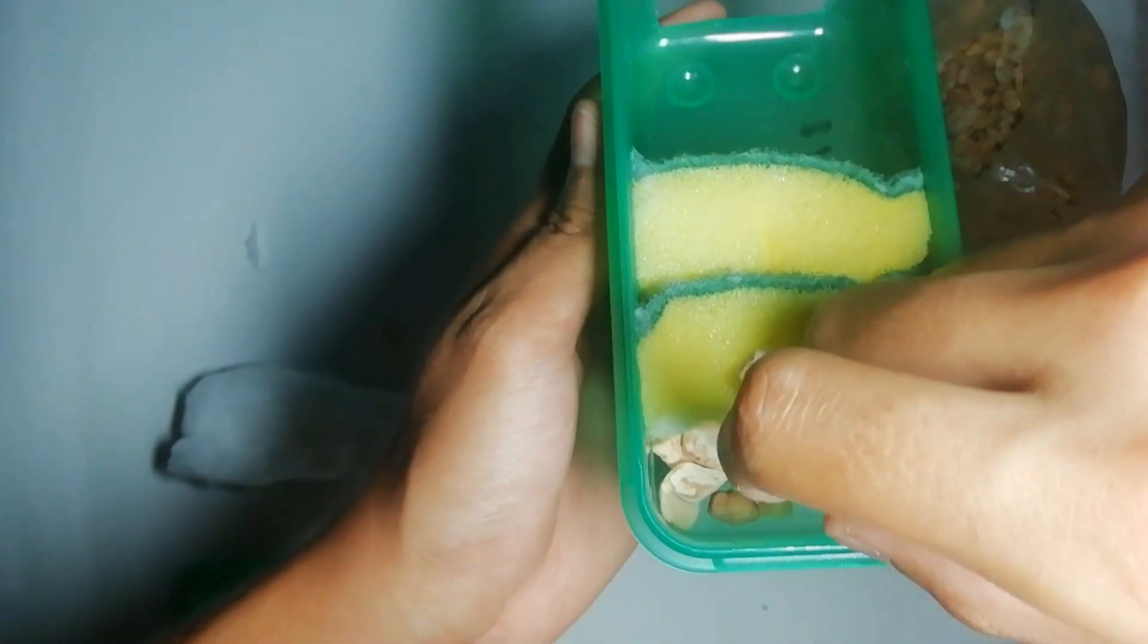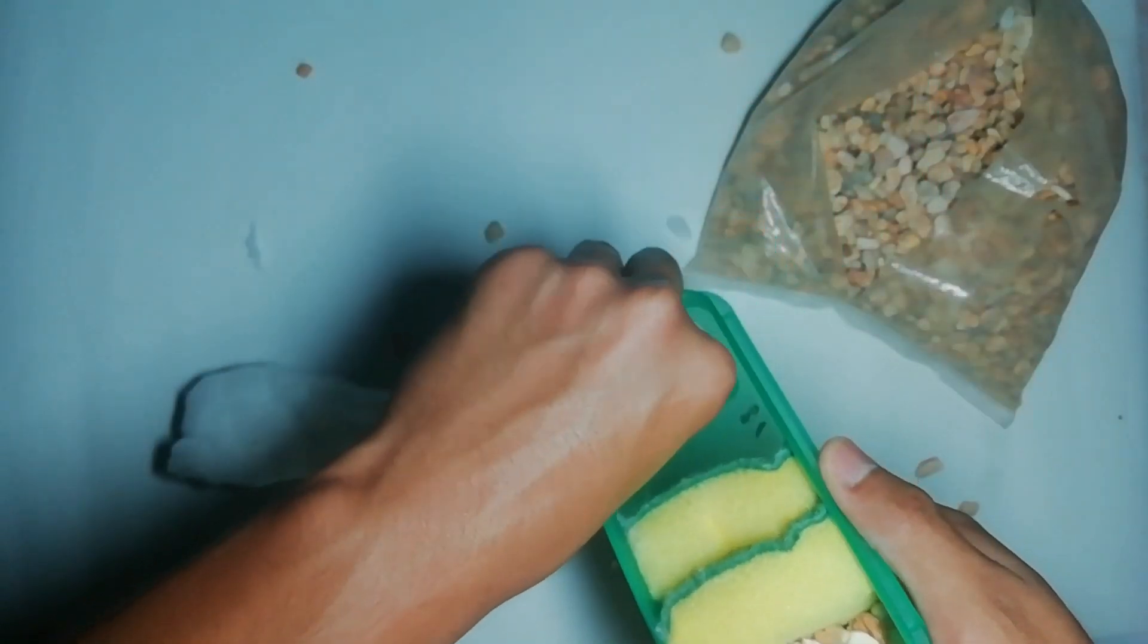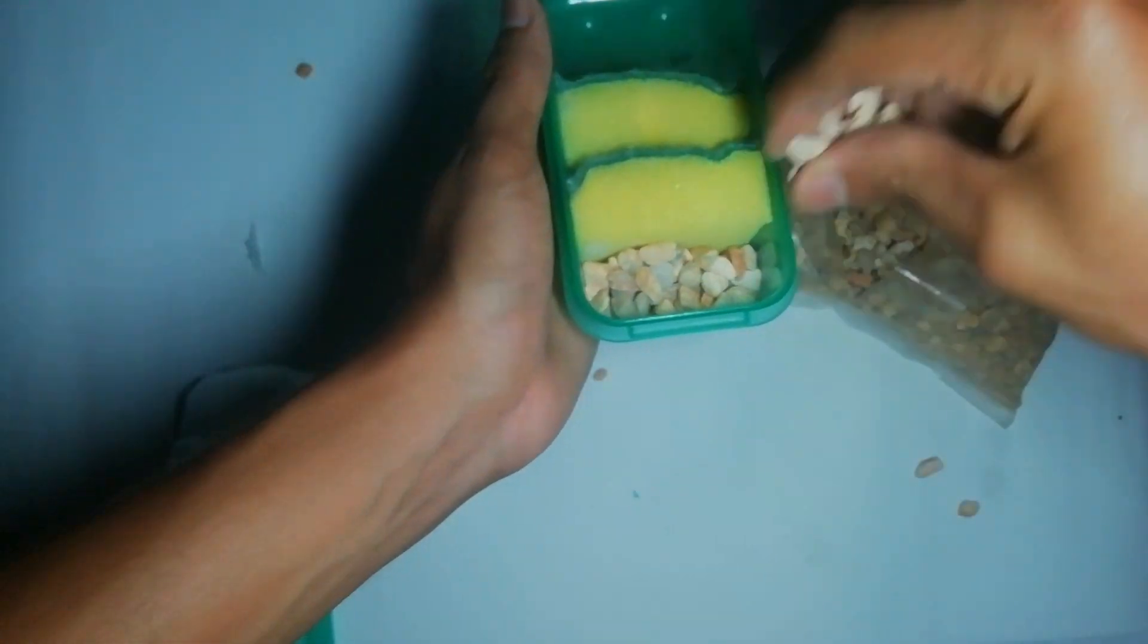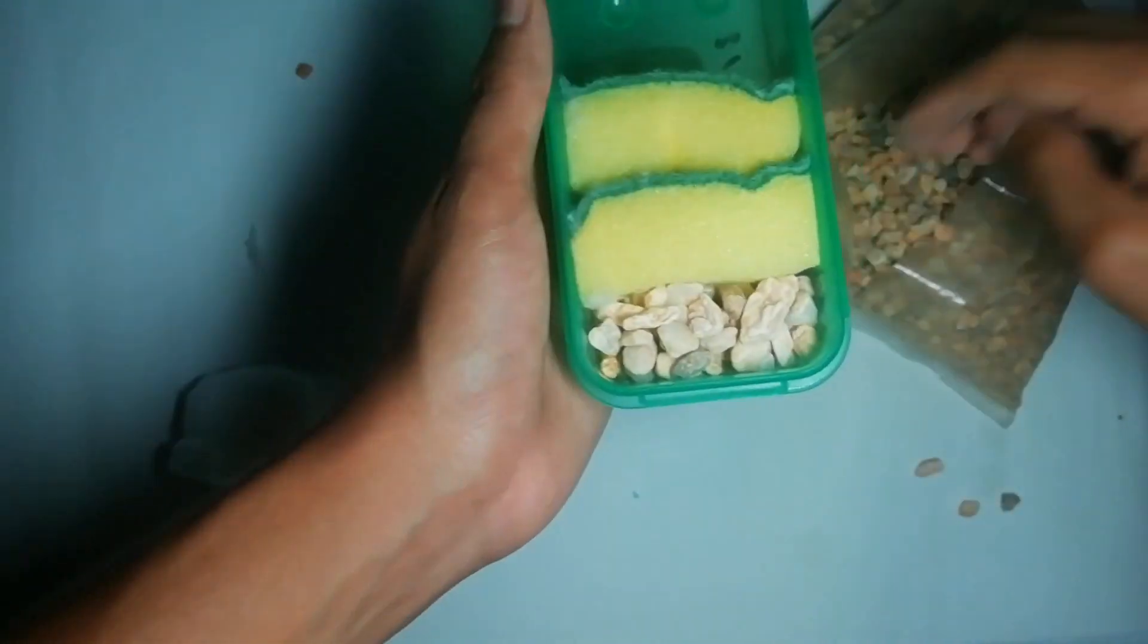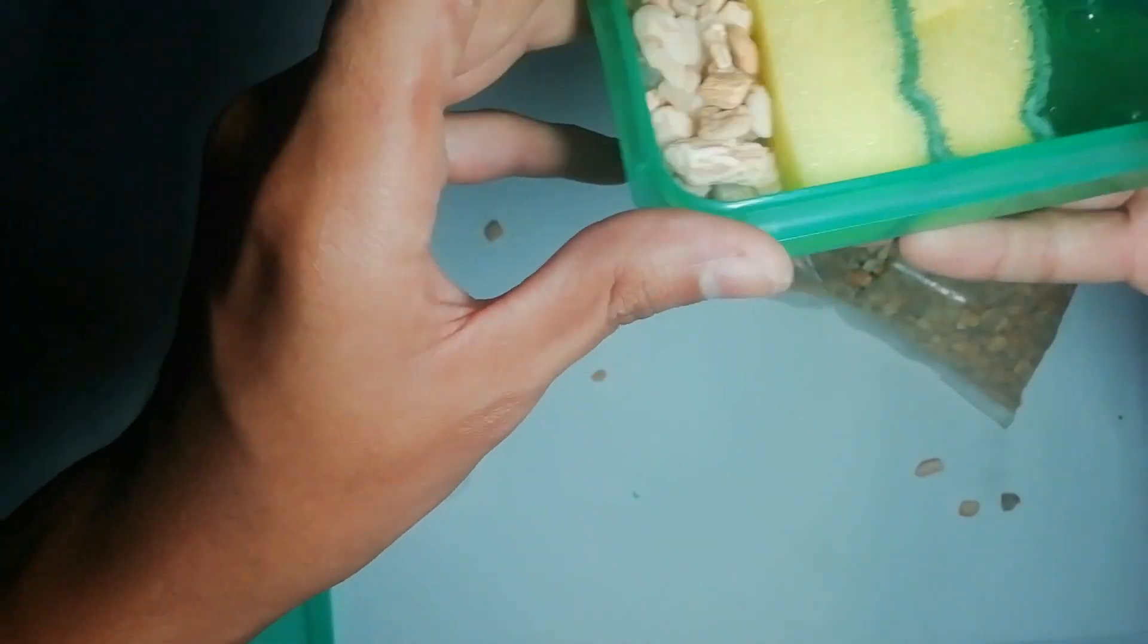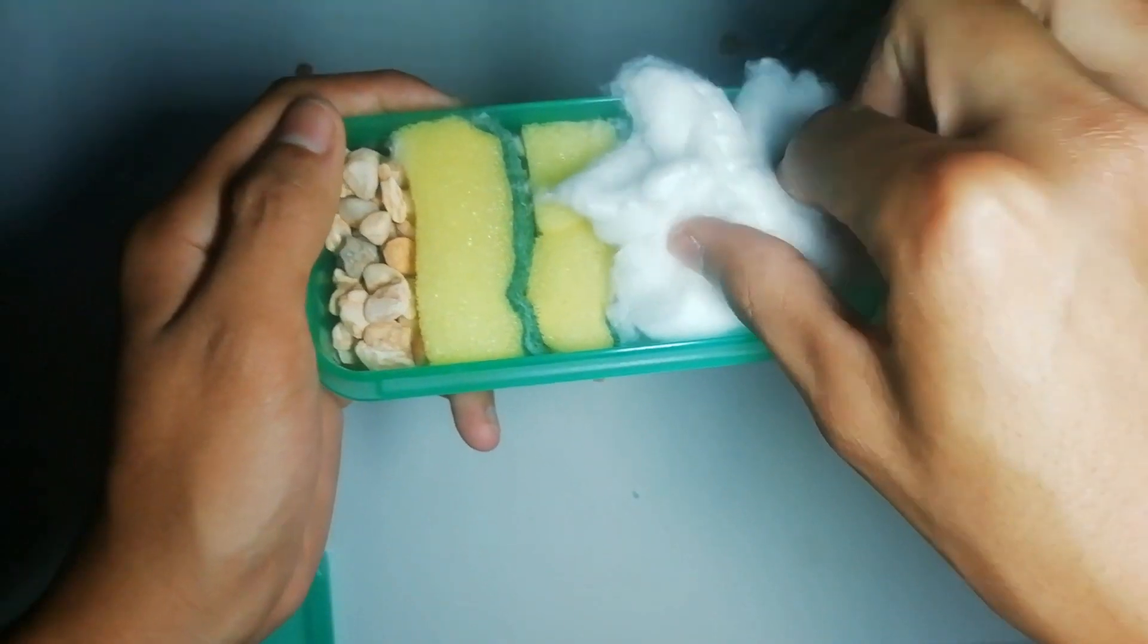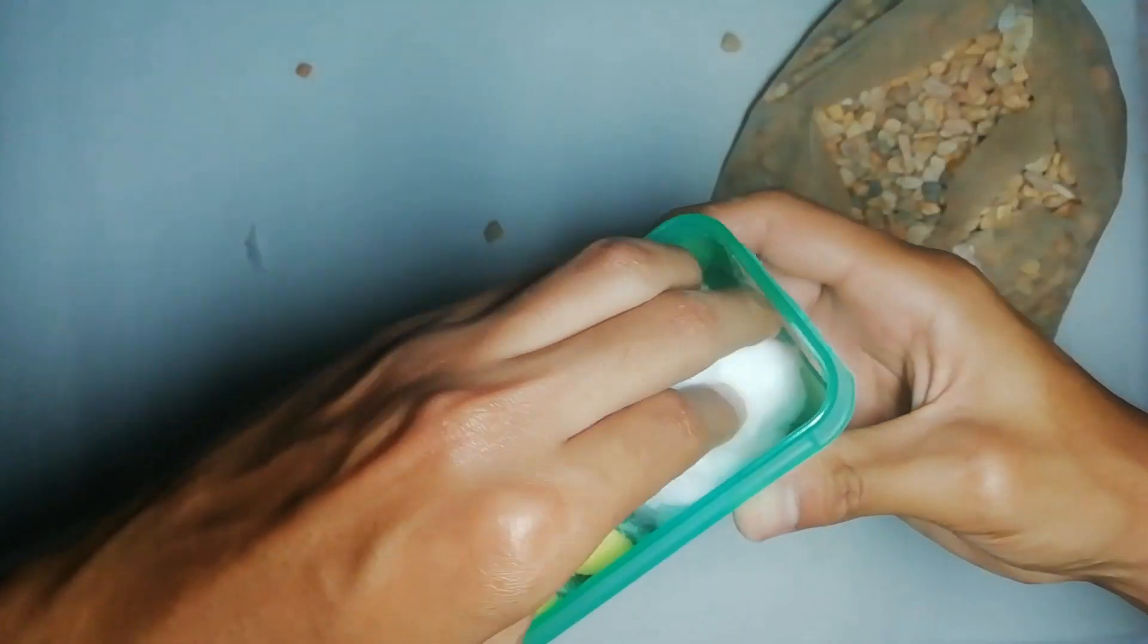Después de esto lo vamos a agregar unas cuantas piedritas en este espacio que dejamos al inicio. Hasta que se llene amigos, ya estoy haciendo mi tiradero pero no importa. No lo dejen muy muy lleno tampoco porque no va a cerrar la tapa. Más o menos de esta manera. Y pues ya por último sería el algodón. Aquí corté un buen pedazo de algodón y lo ponemos casi al final.